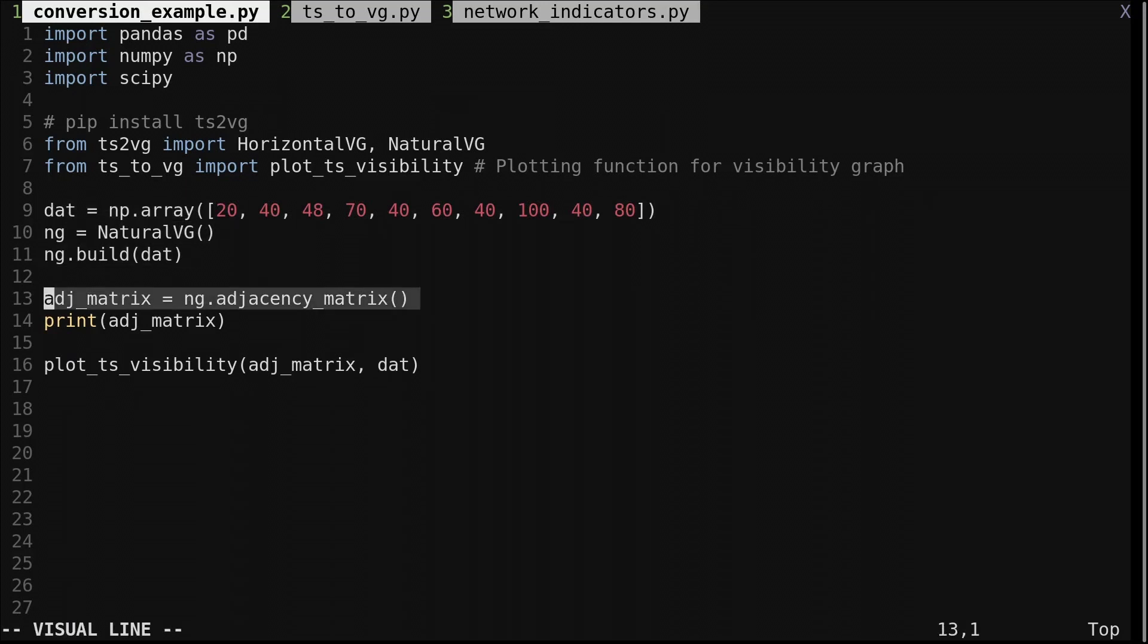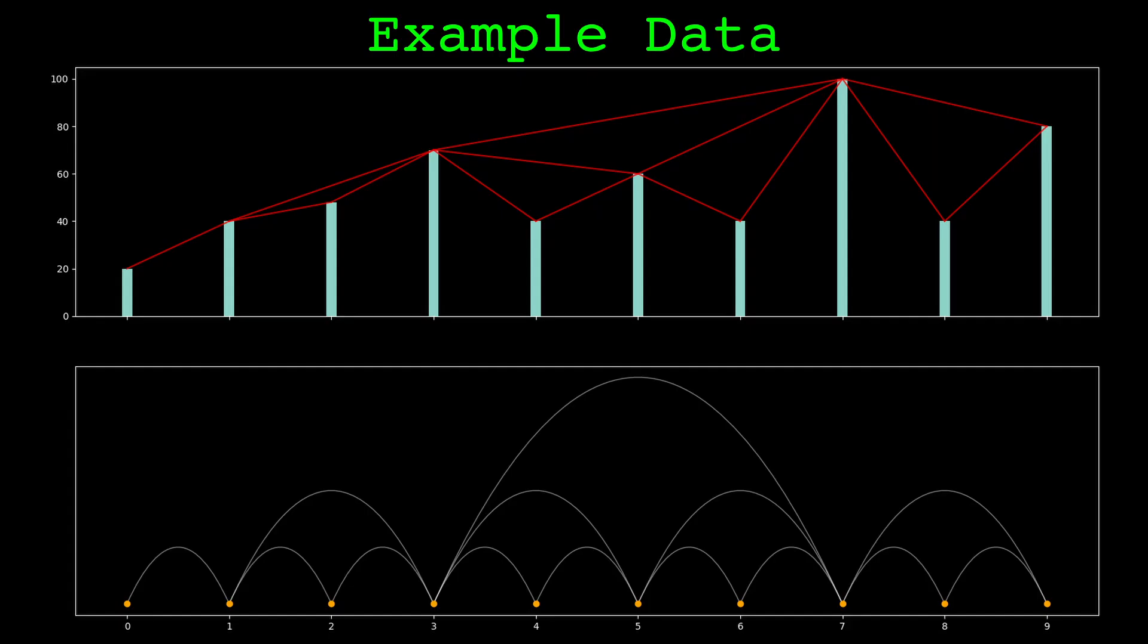The TS2VG module has convenient methods to convert the graph to various formats, but here we get the adjacency matrix. We pass the adjacency matrix and data into the function plot TSVisibility. I wrote this function to draw visibility graphs. Its code is on the GitHub repo. Here is the visibility graph for our example series.